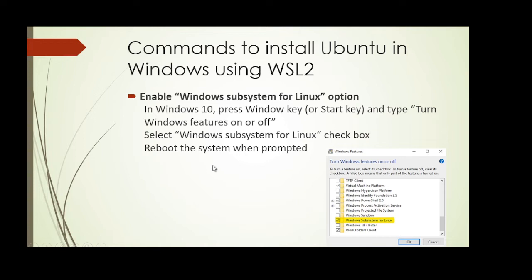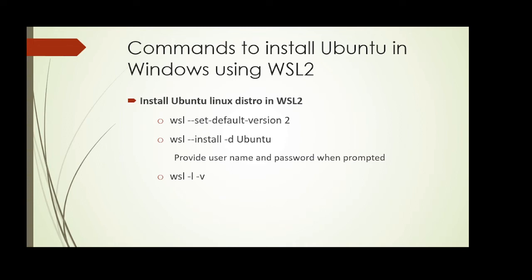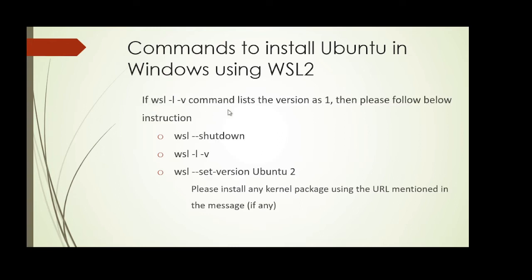Wait for the installation to complete and reboot when prompted. Now let us see the commands to install Ubuntu. Open the command prompt and execute the following commands. The install command will take a little more time as it downloads the OS. It will then prompt you to enter a username and password — this need not be the same as your Windows credentials. It is a one-time activity. The last command lists containers and their WSL version. If Ubuntu is installed as WSL version 1, follow the instructions to set it to WSL version 2. When executing the set version command, it might error out with a URL to install a kernel package — follow those instructions to install the required kernel package.